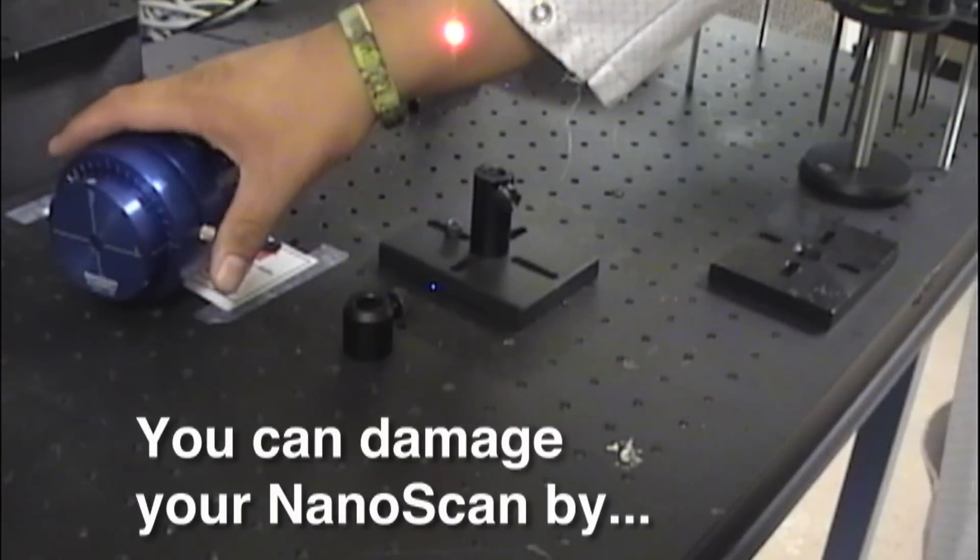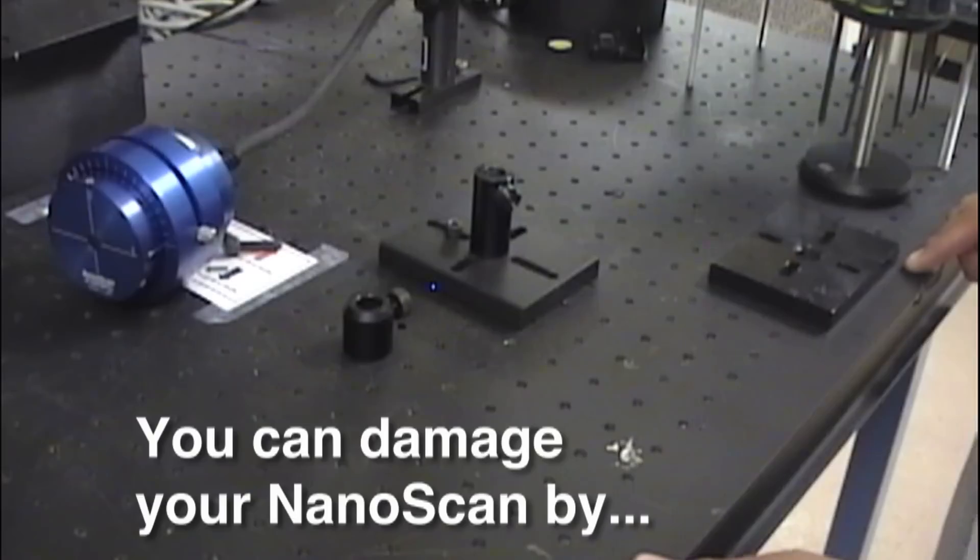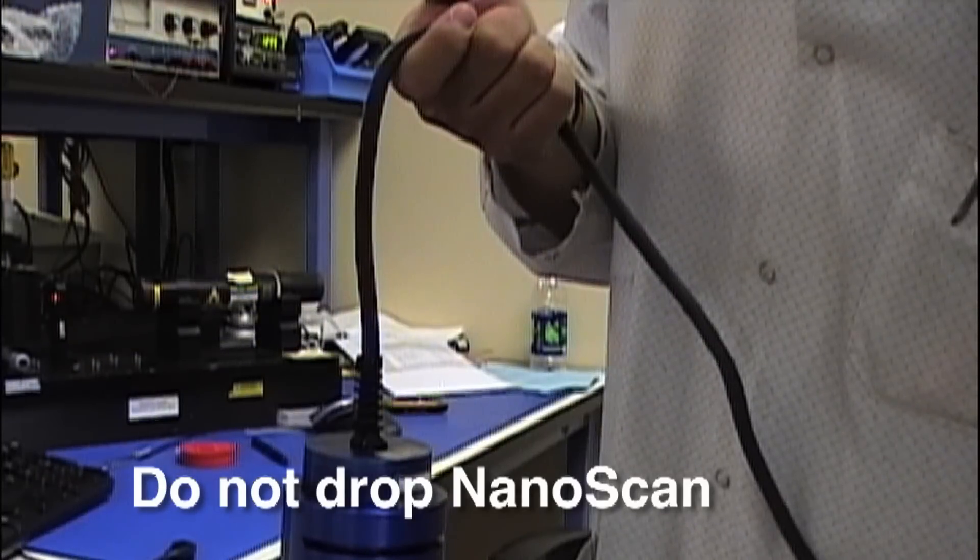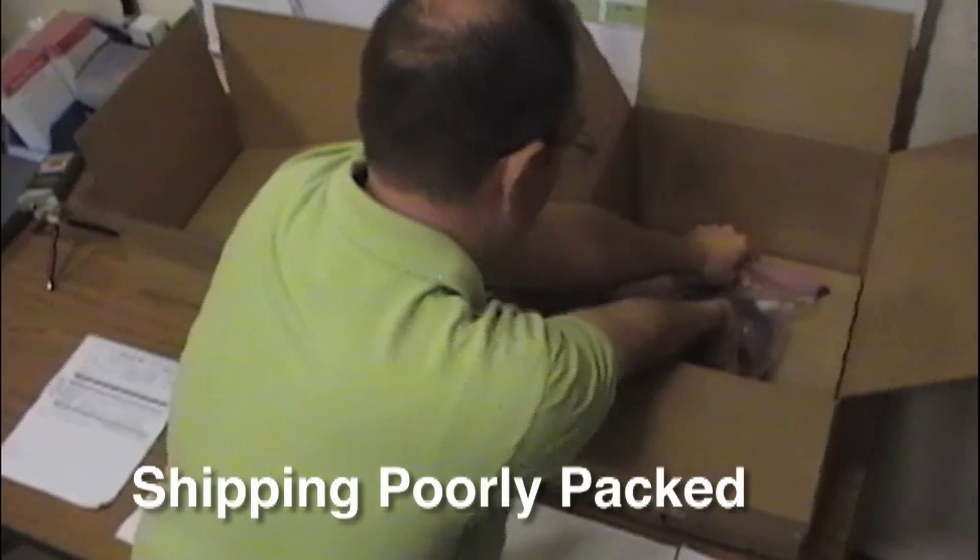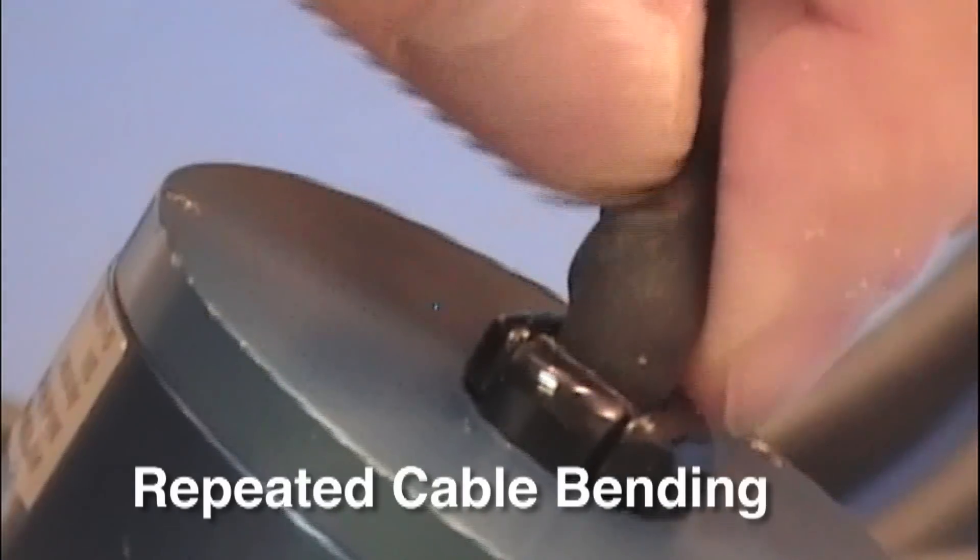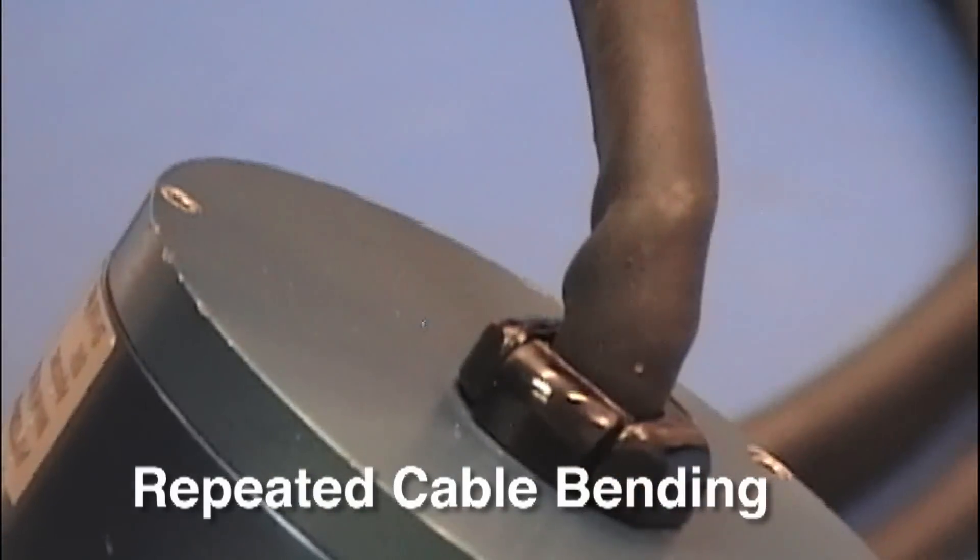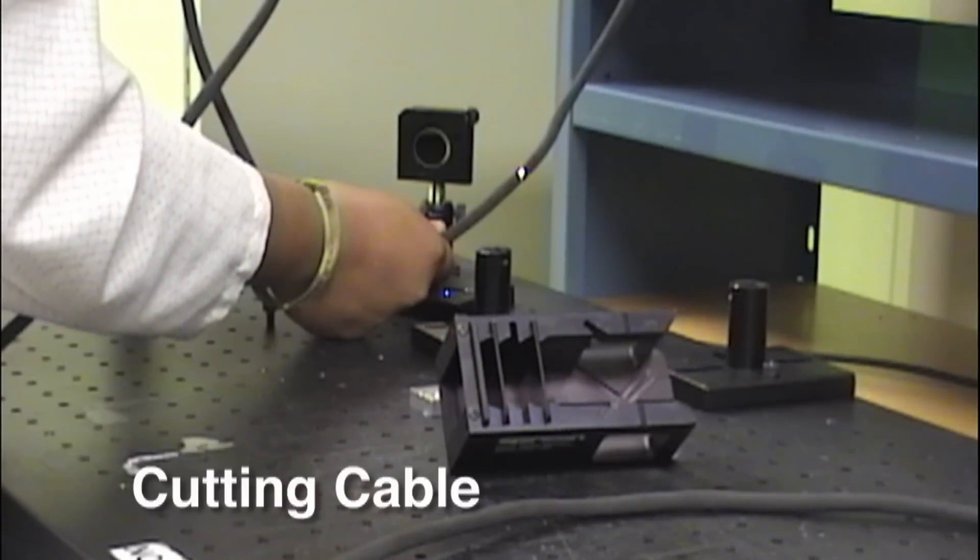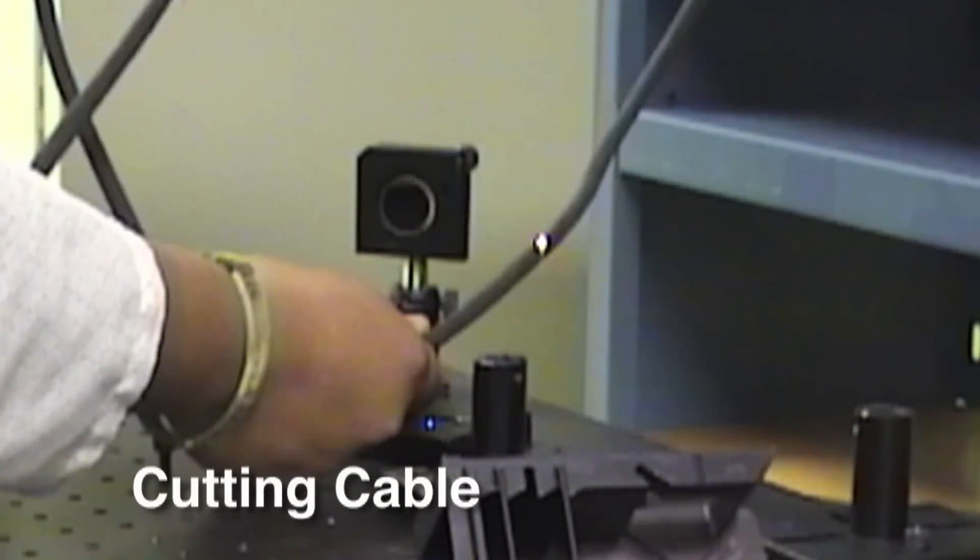You can damage the nanoscan scanning head by dropping it. Do not hold the nanoscan by the cable. Shipping the scan head with insufficient packaging. It can be damaged by bending the cable too tight of a radius or from repetitive bending. Also, the cable can be cut by mechanical means or with high powered lasers.